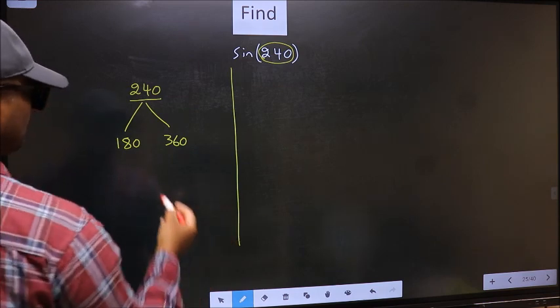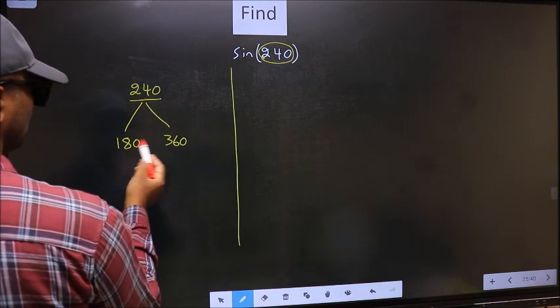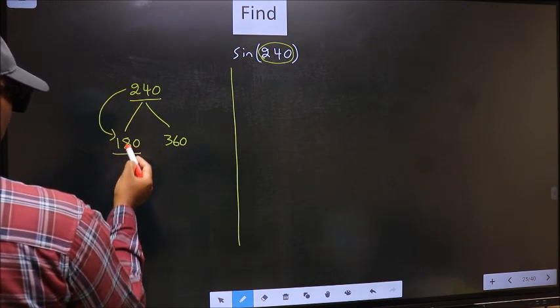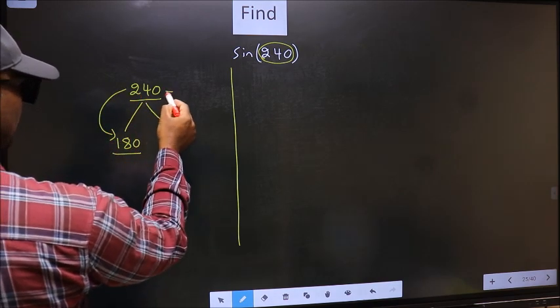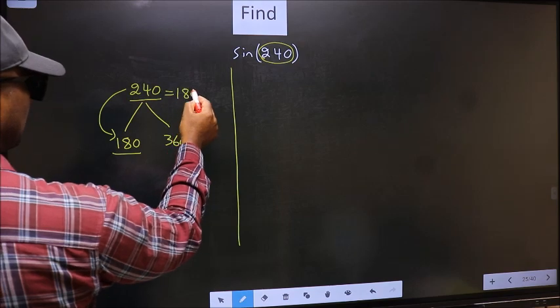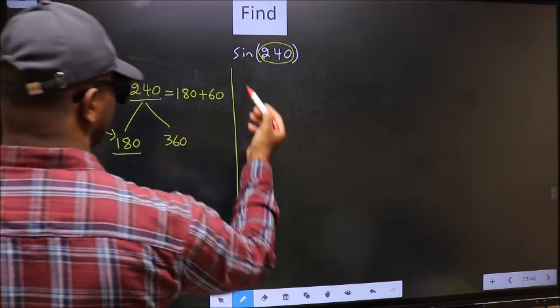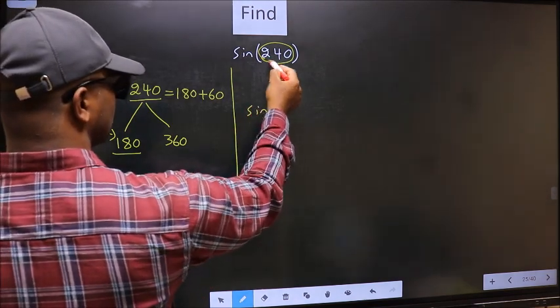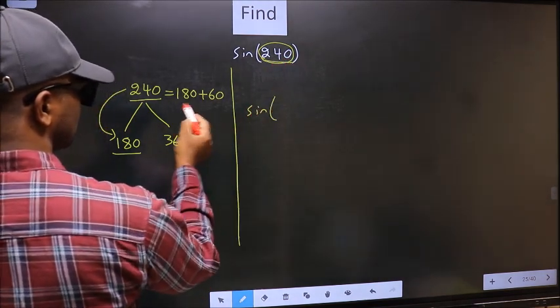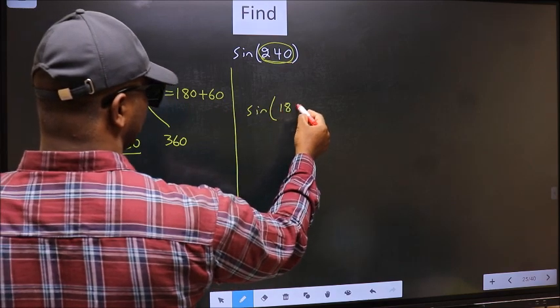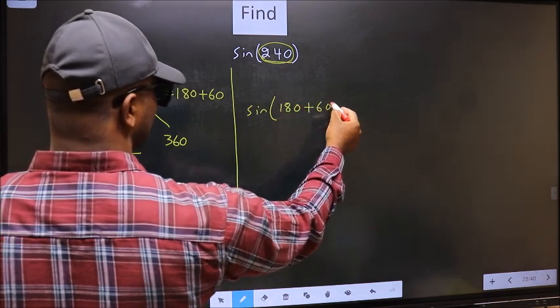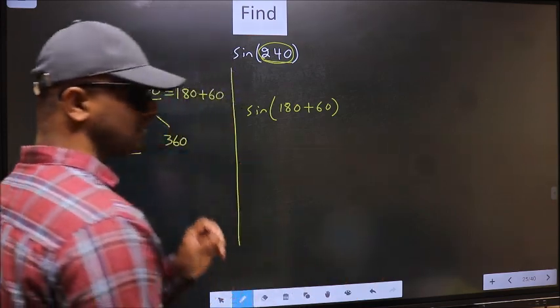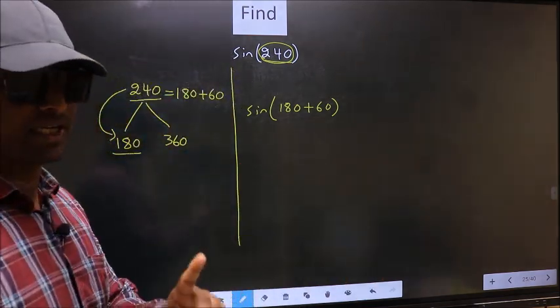Next, now this number is close to which number? This is close to 180. So 240 now should be written as 180 plus 60. So this will become sine - in place of this, we should write this one: 180 plus 60. This is your step 1.